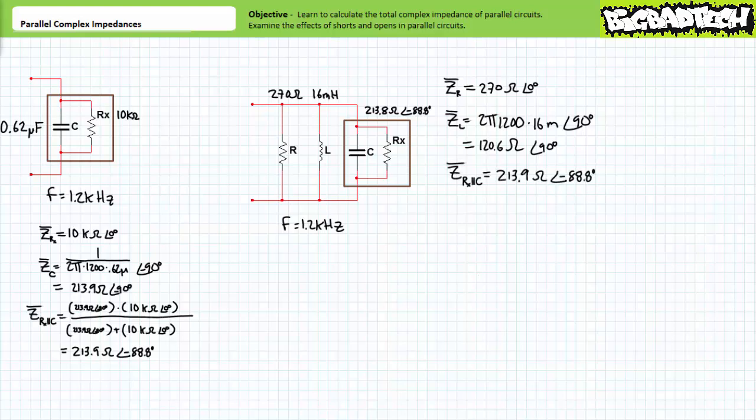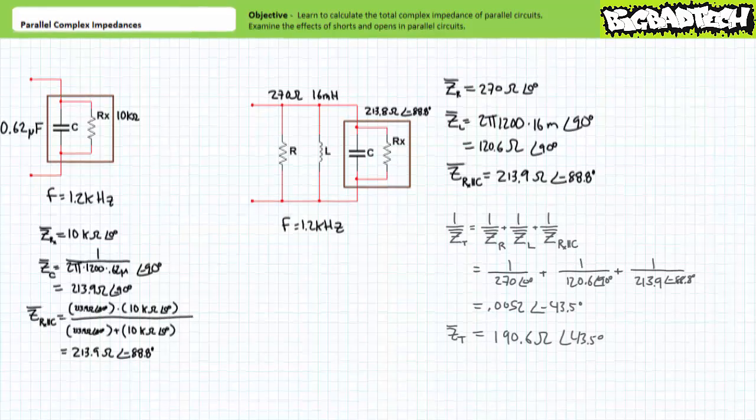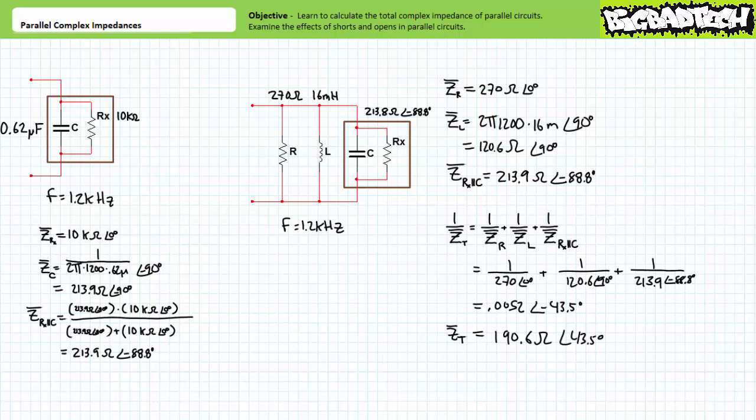As previously demonstrated, the complex impedance of the non-ideal capacitor is roughly 213.9 ohms at an angle of negative 88.8 degrees. When we calculate the total impedance of the parallel combination of ZR, ZL, and our non-ideal capacitor, we arrive at an impedance of roughly 190.6 ohms at an angle of 43.5 degrees.